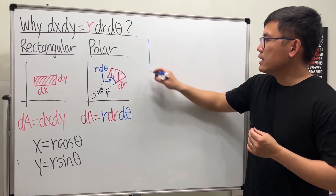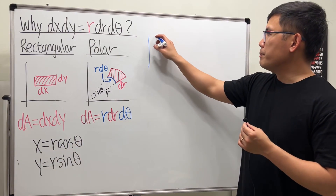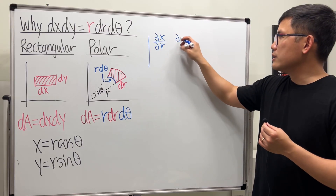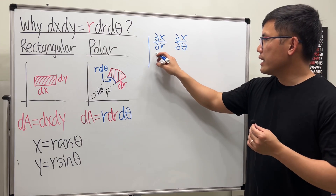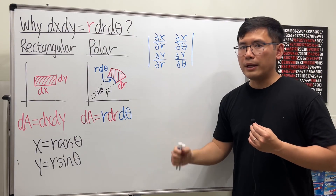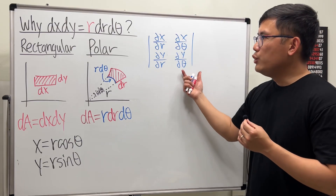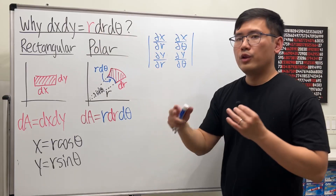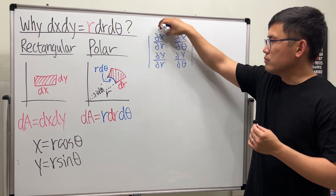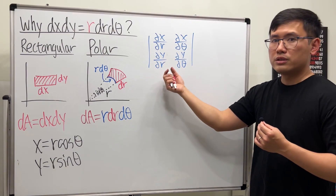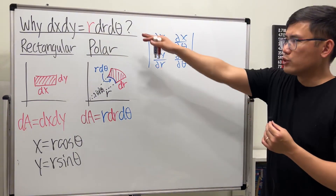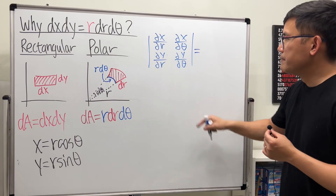The Jacobian matrix says: take the first equation x and do the partial derivative with respect to the first variable r, then with respect to θ. Then do the same for y. At the end, we find the determinant of this 2×2 matrix — that is the Jacobian. We apply absolute value because if you switch the two rows, the determinant becomes negative, so at the very end we just apply absolute value to the differential.